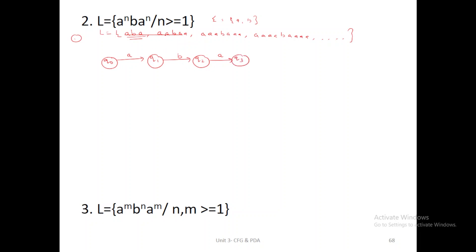If you want to check the second string, double ABA: first A goes to Q1 state. For the remaining A, you should stay in Q1 state. Then all strings contain only one B. After that, Q2 reads A. For the remaining right-side A's, you should stay in Q3 state. Then if the control reads epsilon, you can go to the final state. This is the diagram.